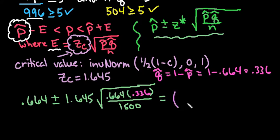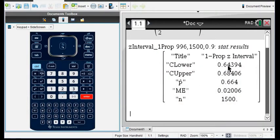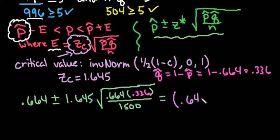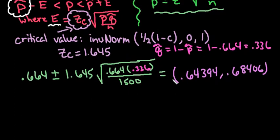You know your p-hat, you know your q-hat, you know your critical value. And then we would just put our answer. So in this case, our answer is going to be the lower and the upper. So I would put 0.64394 to 0.68406. And then you always want to interpret your confidence interval in context of the original problem.